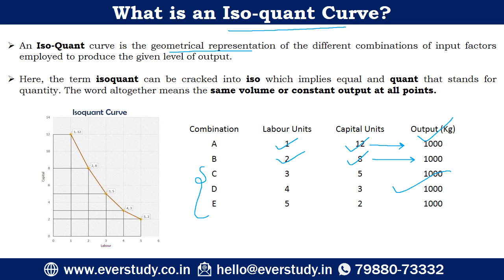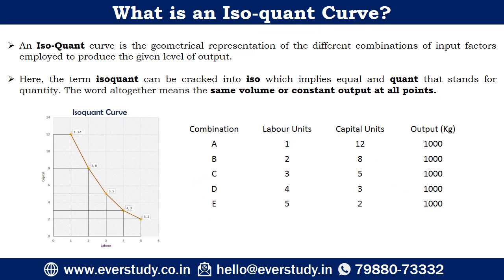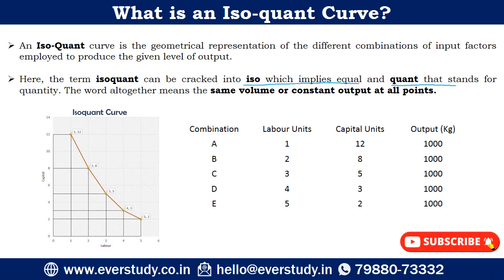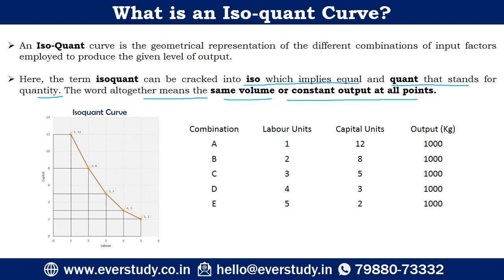This chart we have plotted in the graph. So this is an isoquant curve which shows the same level of output. Here, any combination of labor units and capital units will give the same output. The word isoquant is made of two words: ISO and QUANT. ISO means equal, and QUANT stands for quantity. Together, the meaning is same volume and constant output at all points.